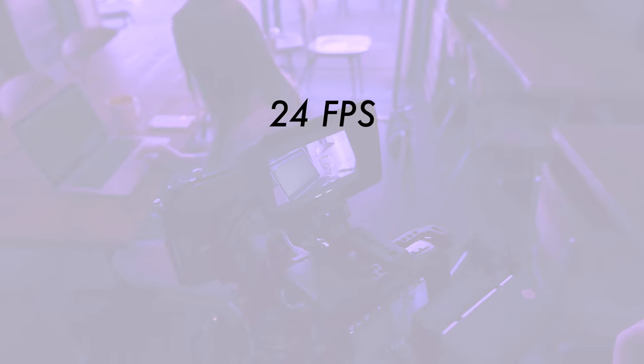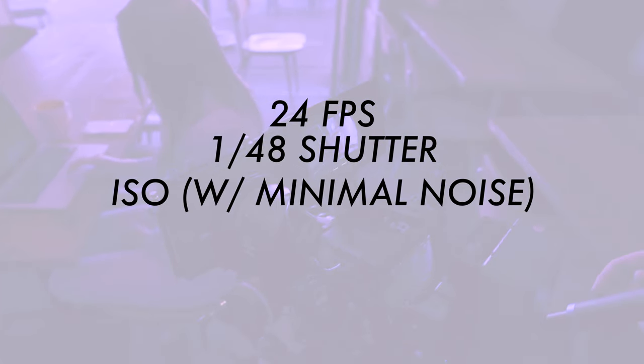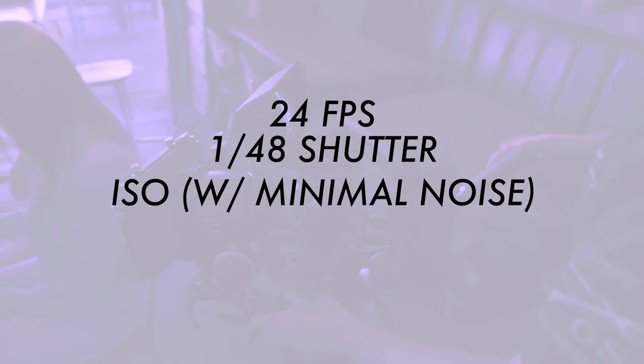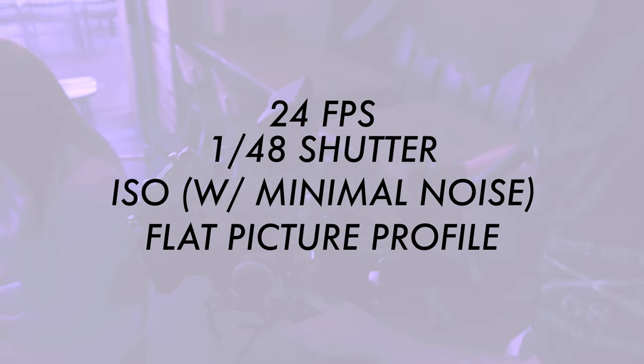So let's say you have all your camera settings dialed in — you're shooting at 24 frames per second, 1/48th shutter speed, the highest ISO you can without introducing a ton of noise, and you're shooting in a flat picture profile — but it's still too dark. What do you do next? That's where camera techniques, framing, lighting, and positioning of your subject all come into play.